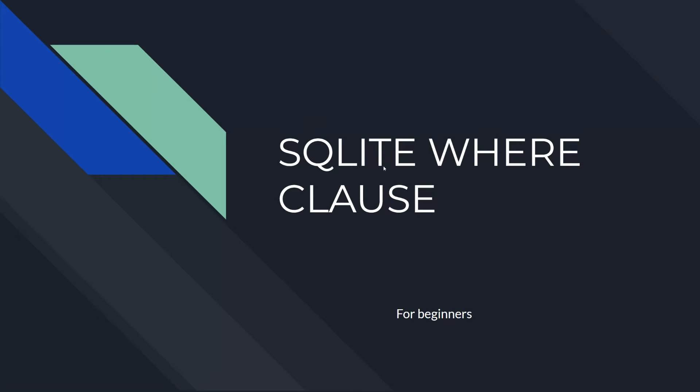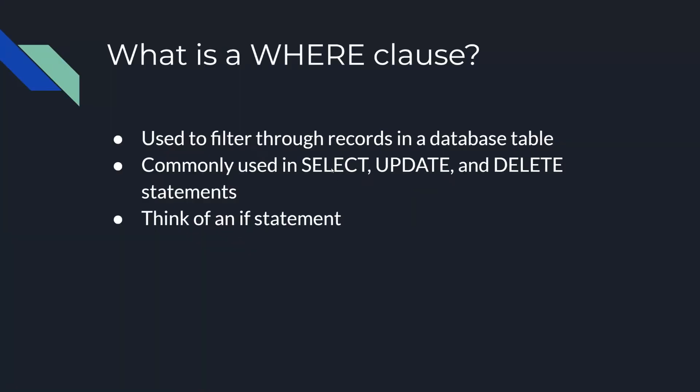These are the slides on the SQLite WHERE clause. So what is a WHERE clause? A WHERE clause is used to filter through records in a database table. It's commonly used in SELECT statements, UPDATE statements, and DELETE statements — most commonly with SELECT statements. It's a great way to narrow down a query. A great way to think of a WHERE clause is just like an if statement.